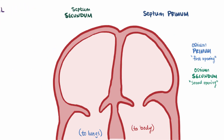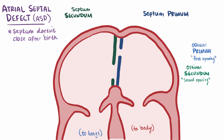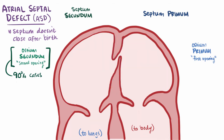An atrial septal defect, or ASD, describes a condition where the septum between the right and left atrium doesn't close up all the way and remains open even after birth. About 90% of ASD cases are due to the ostium secundum — in other words the septum secundum doesn't fuse with the septum primum, and therefore the foramen ovale doesn't close quite right. This actually accounts for about 10–15% of all congenital heart defects and is the most common congenital heart defect in adults.